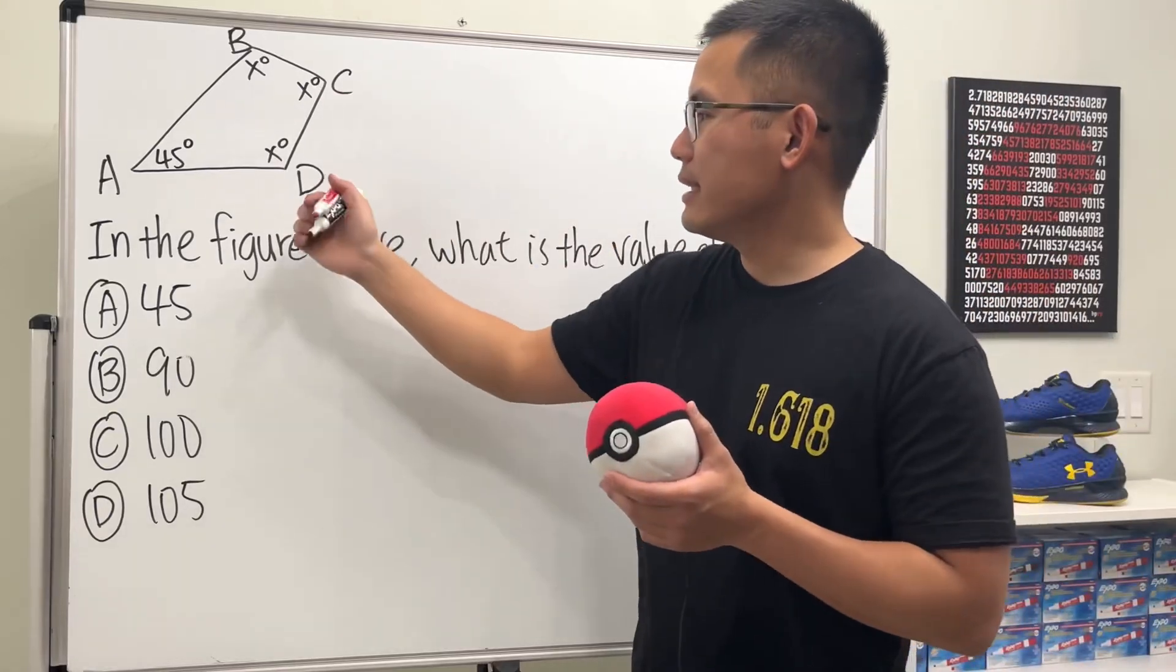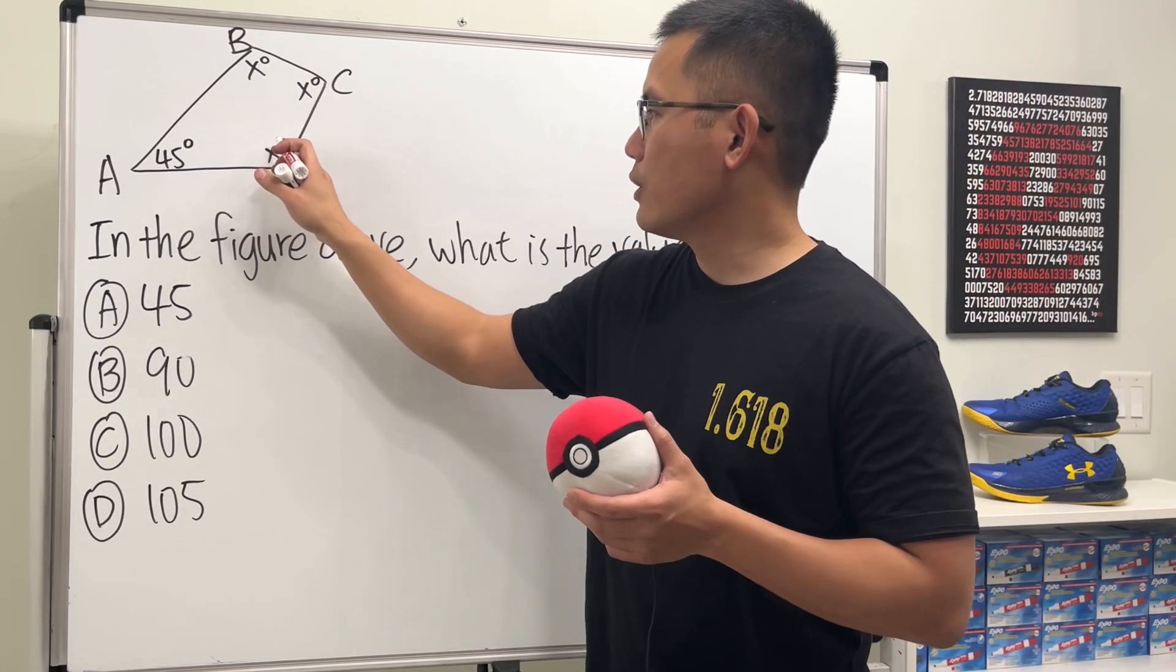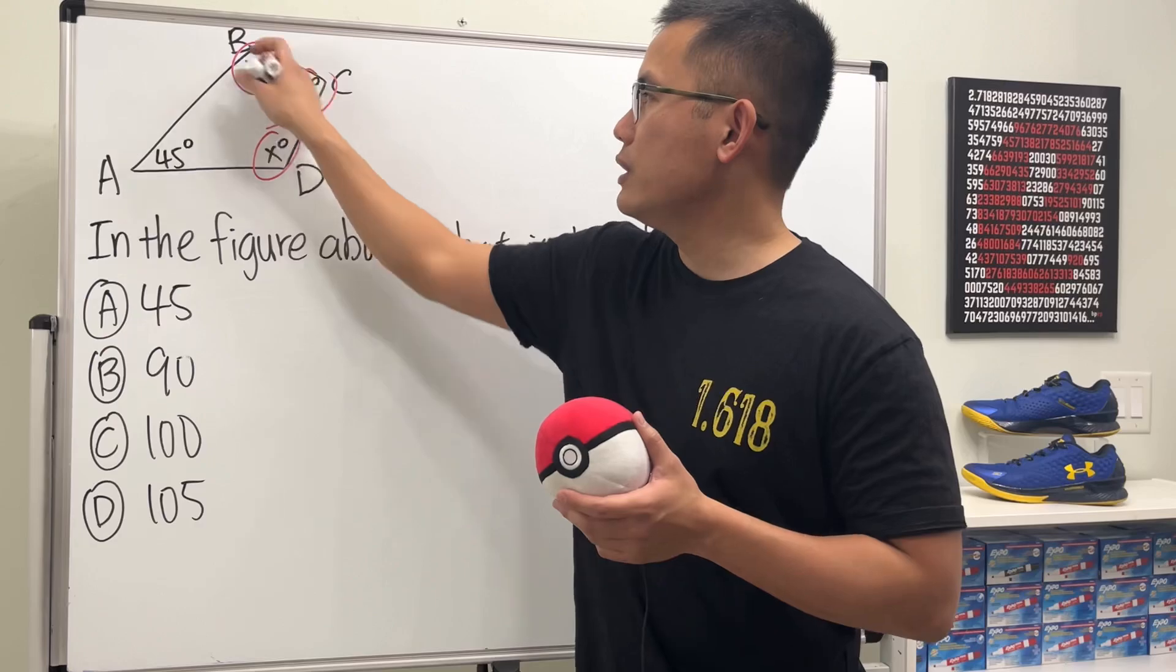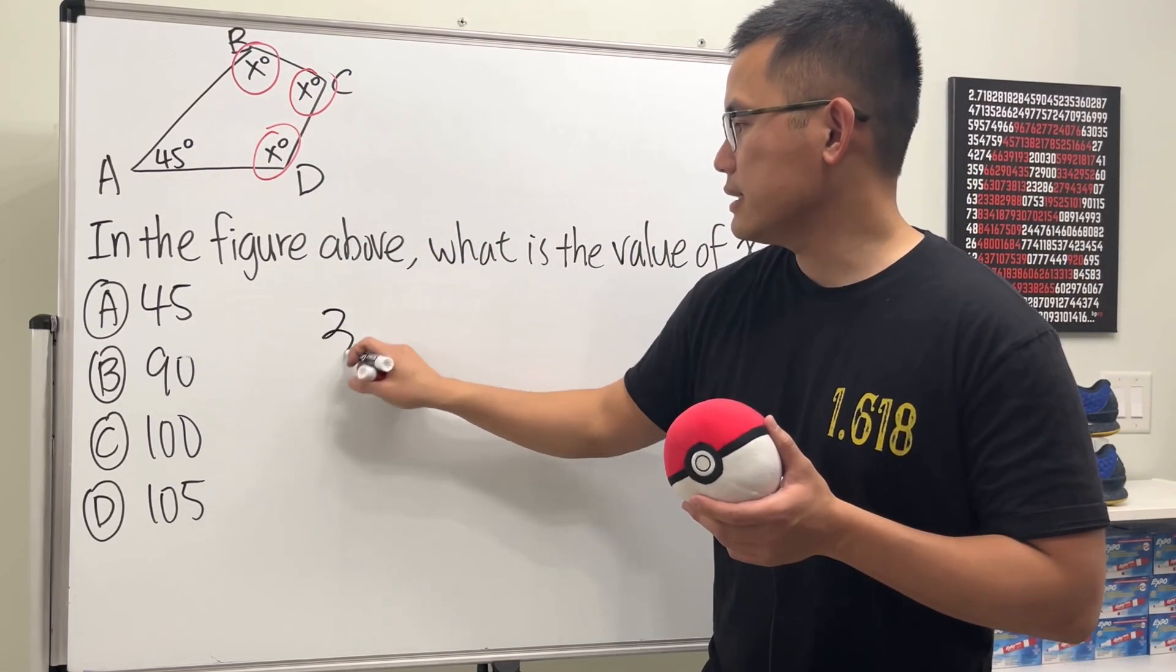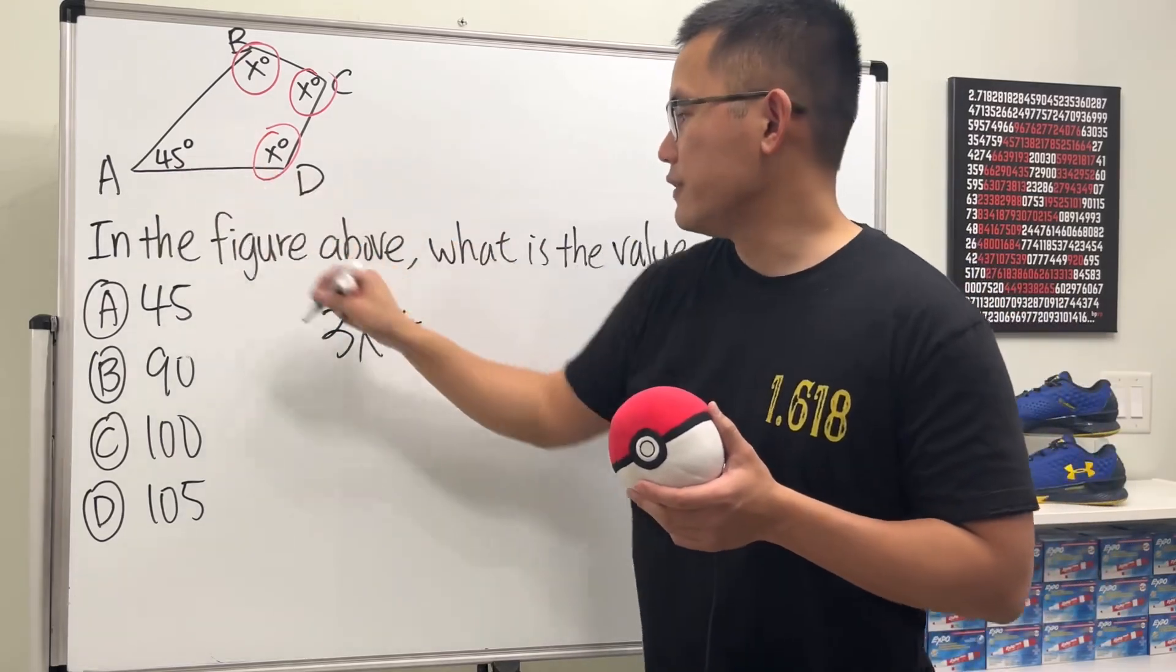All right, so let's just go ahead and write down everything. So we have one, two, three. Three of the x's together, so of course that will just give us 3x, and then plus 45.